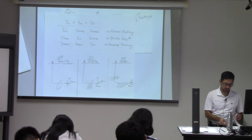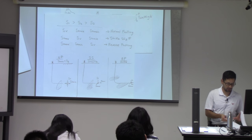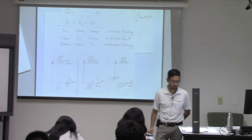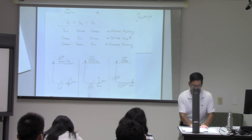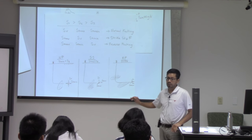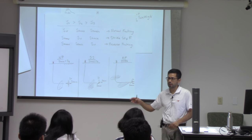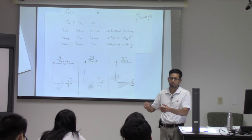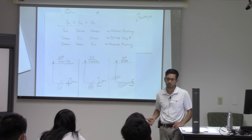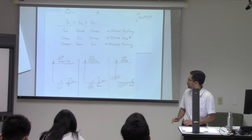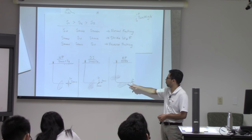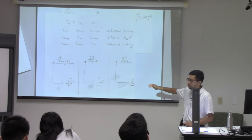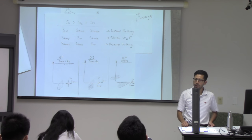[Student question]: So the hydraulic fracture orientation will only depend on which is the minimum stress — S3? [Instructor]: Yes, on S3. Later on we'll see that sometimes when S2 and S3 get close to each other, you start to have some complex hydraulic fracturing with fractures branching and going into other directions. But ideally, if S3 is much less than S2 and S1, you will have preferential propagation on a plane perpendicular to S3.